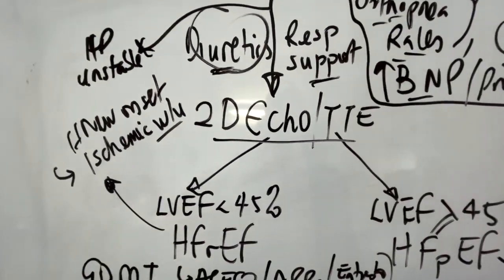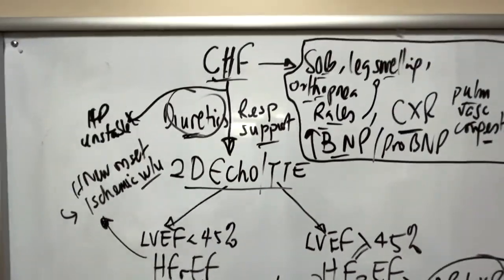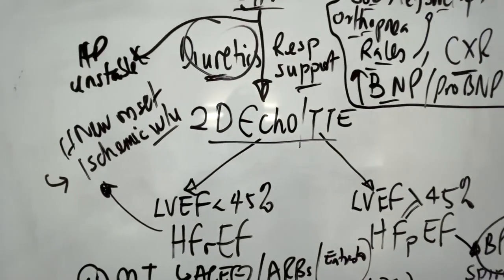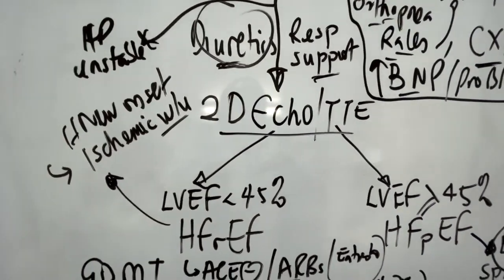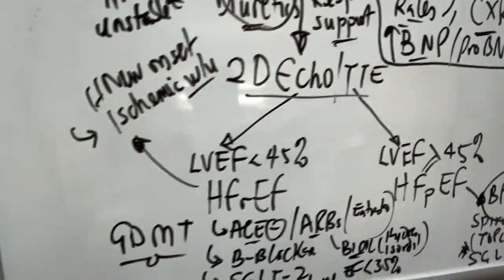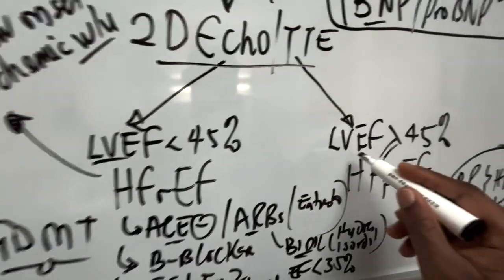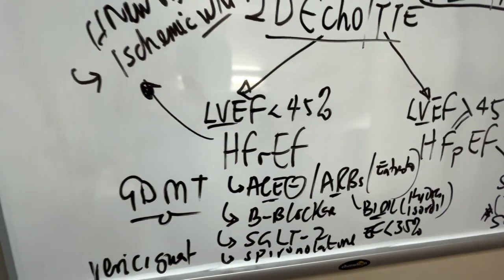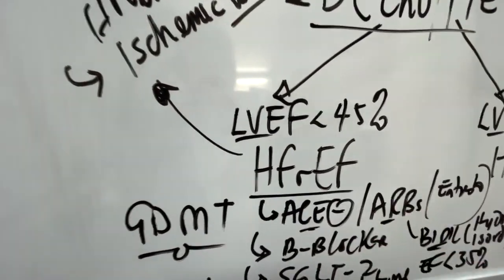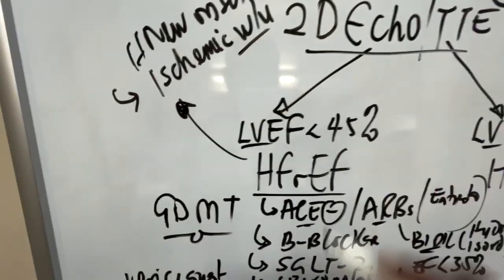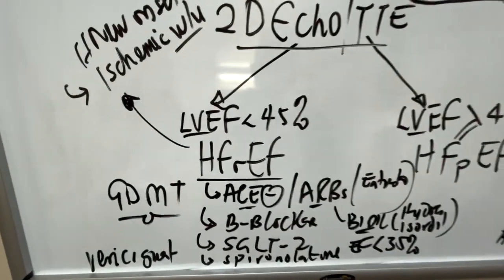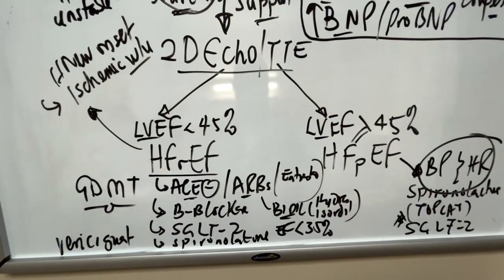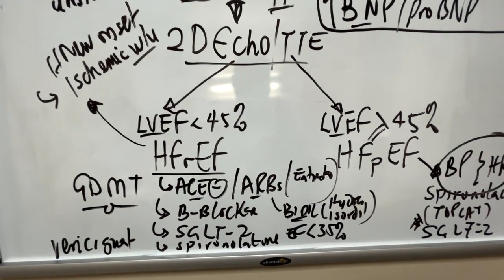Ultimately you still have to know what kind of heart failure you're dealing with. The first thing you have to do to delineate from just regular heart failure to the specific type will be the 2D echo or transthoracic echocardiography. That typically tells you the left ventricular ejection fraction.